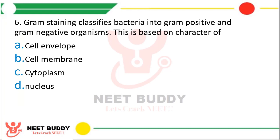Question six. Gram staining classifies bacteria into gram positive and gram negative organisms. This is based on the character of: option A cell envelope, option B cell membrane, option C cytoplasm, or option D nucleus. The correct answer is option A — cell envelope. Gram positive organisms have a thick peptidoglycan layer outside the cell membrane which helps them retain the primary gram stain. This layer is absent in gram negative organisms, so gram negative organisms take up the counter stain. The property of the cell envelope decides whether an organism is gram positive or gram negative.